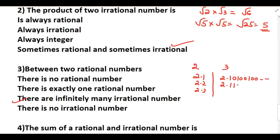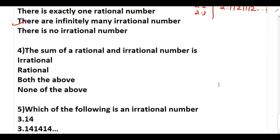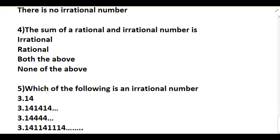Also between two rational numbers like 2 and 3, I can find infinitely many irrational numbers, for example 2.10100100000... or 2.111112... and so on. Next question: the sum of a rational and an irrational number is. For example, 2 is a rational number and root 3 is an irrational number. We cannot add them directly — the result 2 plus root 3 is always irrational. The sum of a rational and an irrational number is always irrational.